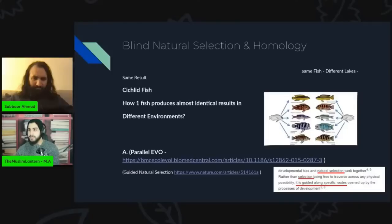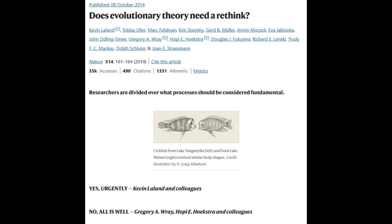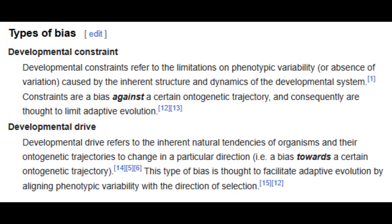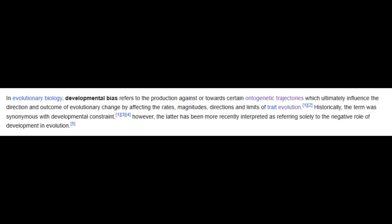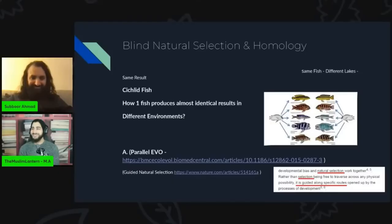That research from Nature magazine says to you that developmental bias and natural selection work together rather than selection being free to traverse any physical possibility — it is guided along specific routes. His question is: guided by who? This is the Nature article to which he is referring — it discusses the role of development in evolution. With regards to the guiding, it is not by a 'who.' The guiding relates to constraints within development. Who's guided the structural cell? They just put a fancy name — parallel evolution — and say that it has to be guided without giving an explanation. The explanation is there in the article you quoted. For anybody who wants to learn more about this, they can look up evolutionary developmental biology and developmental bias.